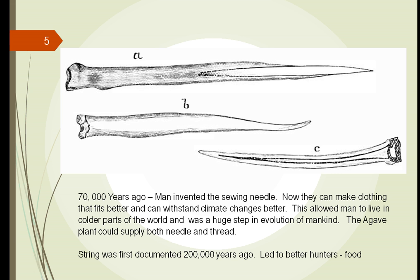Early on, plants were used for food and also for clothing. One of our earliest inventions was the sewing needle. How did humans learn to take the skins from animals and wear them as clothing, and how did they keep pieces of skin together? It was because of a plant. They discovered they could take the sharp tip of a plant, make a needle out of it, and bring two hides together to make different clothing.